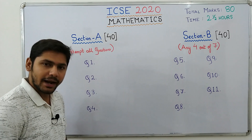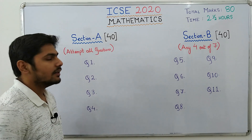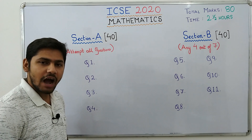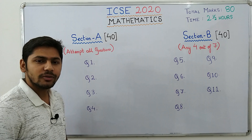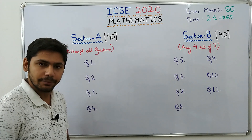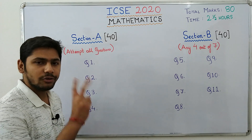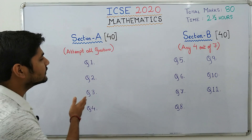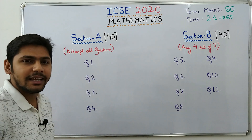The ICSE Mathematics question paper is 80 marks and you get two and a half hours to solve it, plus an additional 15 minutes to read the question paper. The paper is divided into two sections: Section A worth 40 marks and Section B worth 40 marks.